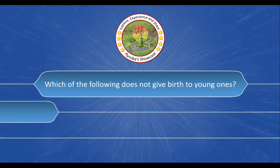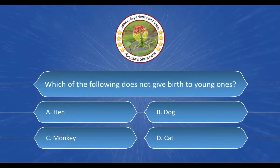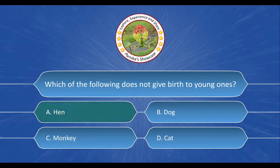Next question: which of the following does not give birth to young ones? The options are: a) hen, c) monkey, d) cat. The correct answer is option a) hen.